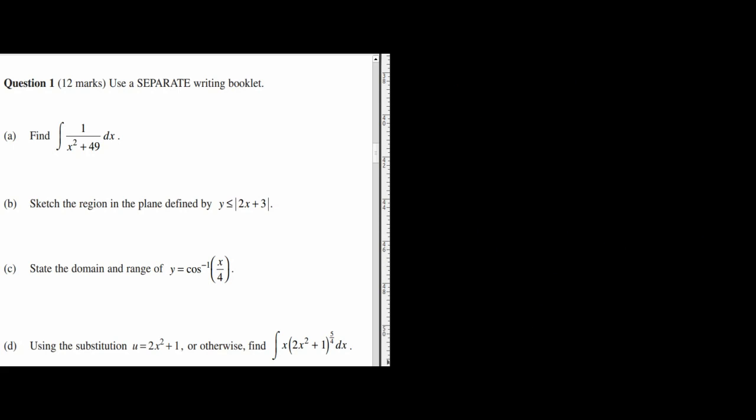Part d is saying, using the substitution u is equal to 2x squared plus 1, or otherwise, do the integral of x on 2x squared plus 1 to the power of 5 on 4 dx. It'll be really good if you can do this without doing substitution, especially considering that when you differentiate what's inside here with respect to x, you get 4x. And this thing over here, what you can do is introduce a 4, and because I introduced a 4, I need to get rid of it, so it'll become 1 on 4. If you can see this method, by all means go ahead, but right now I'm just going to do the substitution method.